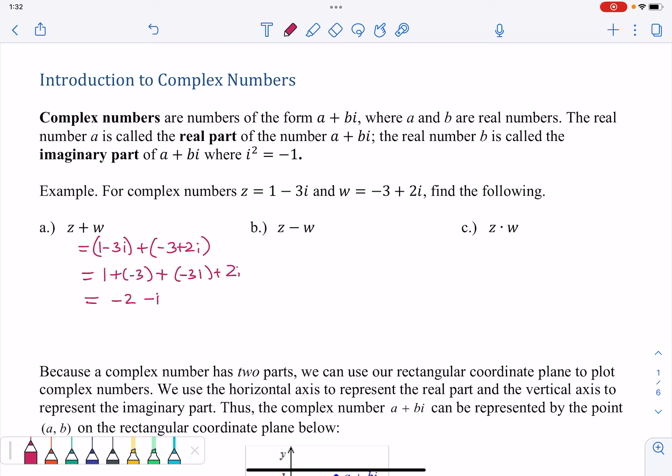So let's look at Z minus W. So for Z minus W, same idea. I'm going to write equals Z, 1 minus 3I, minus negative 3 plus 2I. So this gives me 1 minus 3I plus 3 minus 2I. So remember, we have to apply that subtraction to both things within the parentheses. So then I get 4 minus 5I.